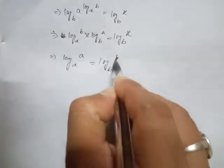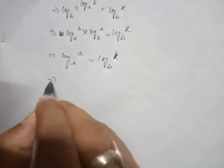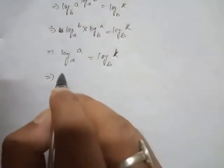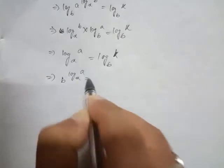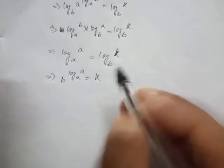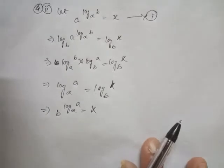Now look student after that, next would be that b log x a equal to k. Now what is the value of k here? Value of k is equation number one, so we'll just put down the value of equation number one here in place of k.